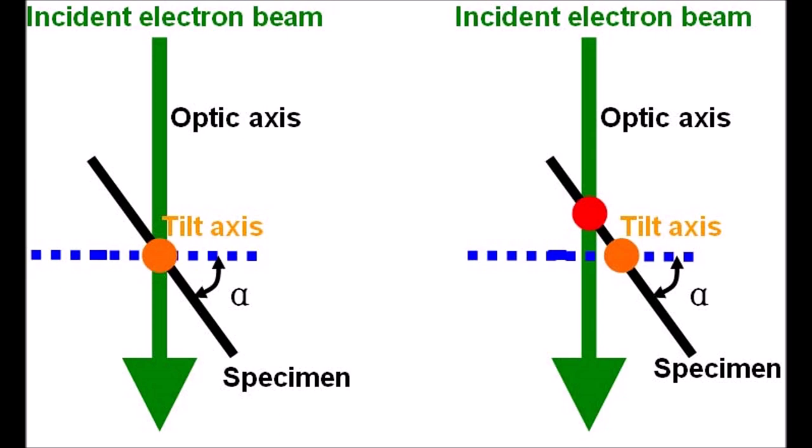Looking at this diagram, on the left the area on the specimen illuminated by the beam along the optic axis is intersecting with the eucentric tilt axis, so that specimen is at eucentric height. On the right, the point where the specimen intersects the optic axis is no longer intersecting the eucentric tilt axis — that would be above the eucentric height.